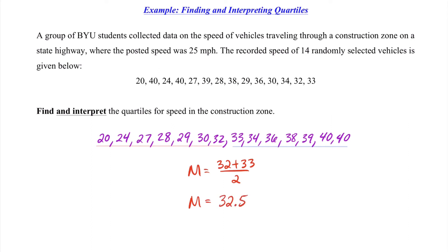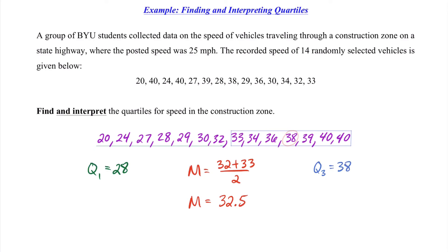Now to find Q1, remember that's the median of the bottom half of our data, which goes from 20 up to 32. We have seven pieces of data in that bottom half, so we take the middle value, which is 28. So our Q1 is 28. Similarly, to find Q3, we look at the top half of the data, which goes from 33 up to 40. We again have seven data points, and since it's odd, we take the middle value, which is 38. Our Q3 is equal to 38.